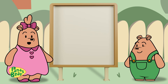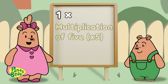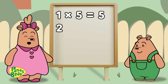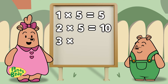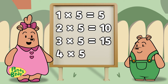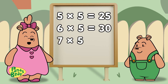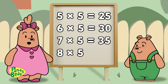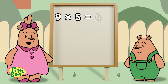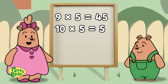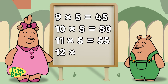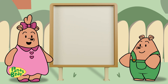Phew! Pansper, are you okay? Goodie! Now it's time for multiplication of 5. 1×5=5, 2×5=10, 3×5=15, 4×5=20, 5×5=25, 6×5=30, 7×5=35, 8×5=40, 9×5=45, 10×5=50, 11×5=55, 12×5=60. And we're done!